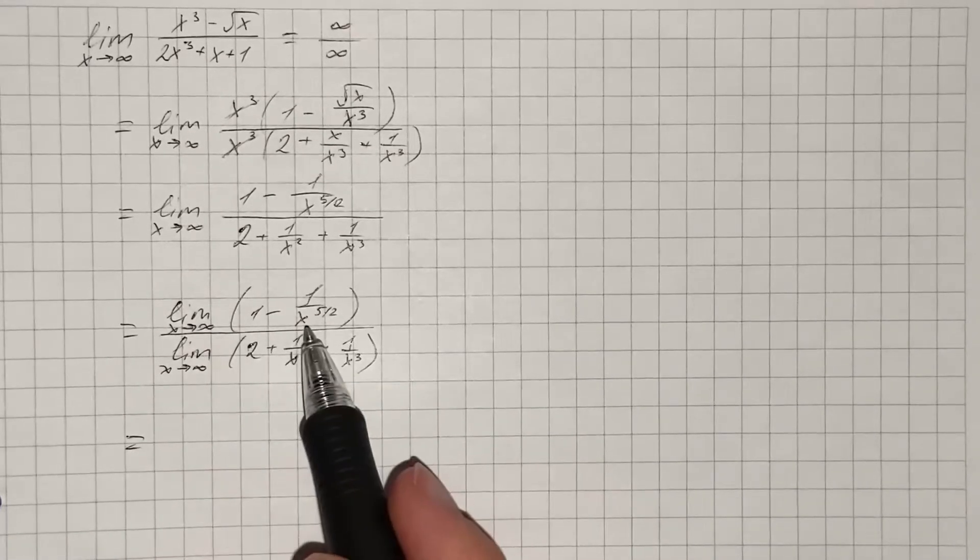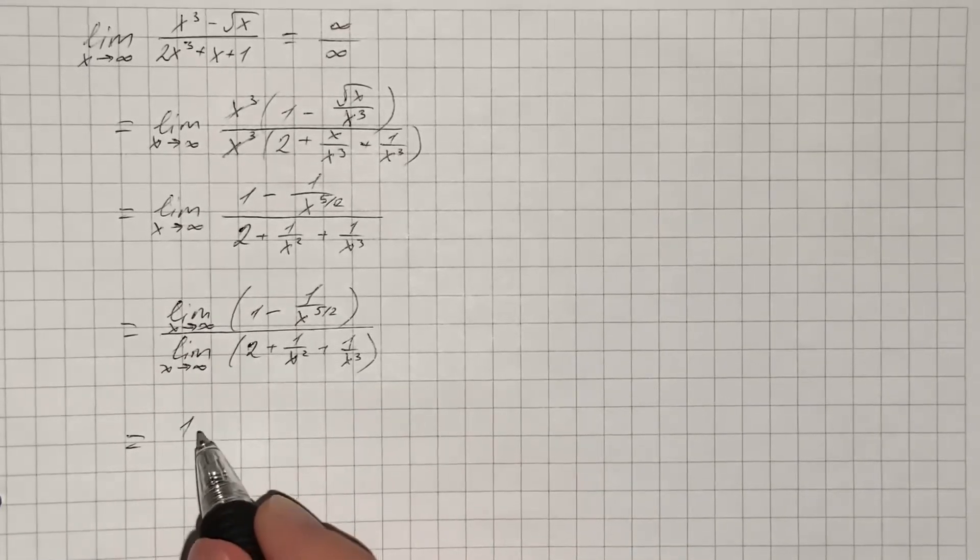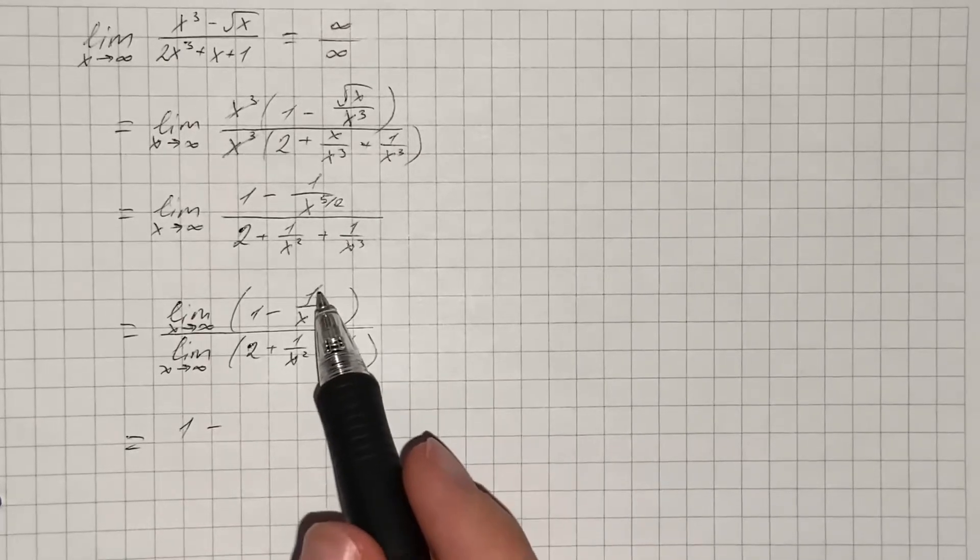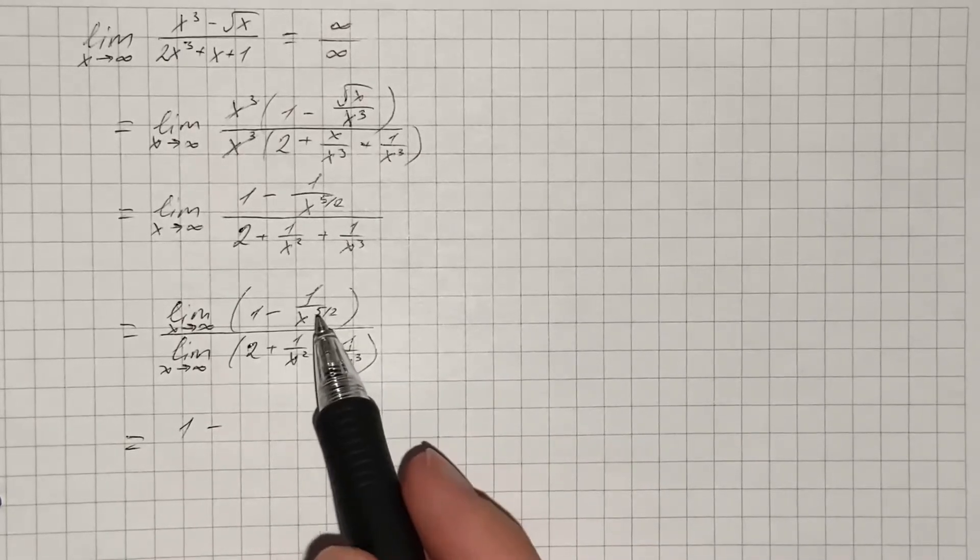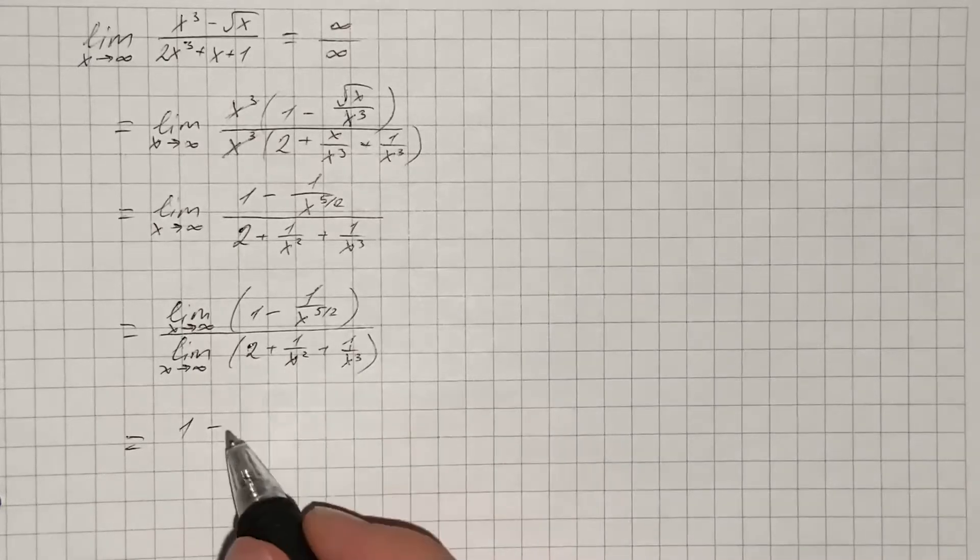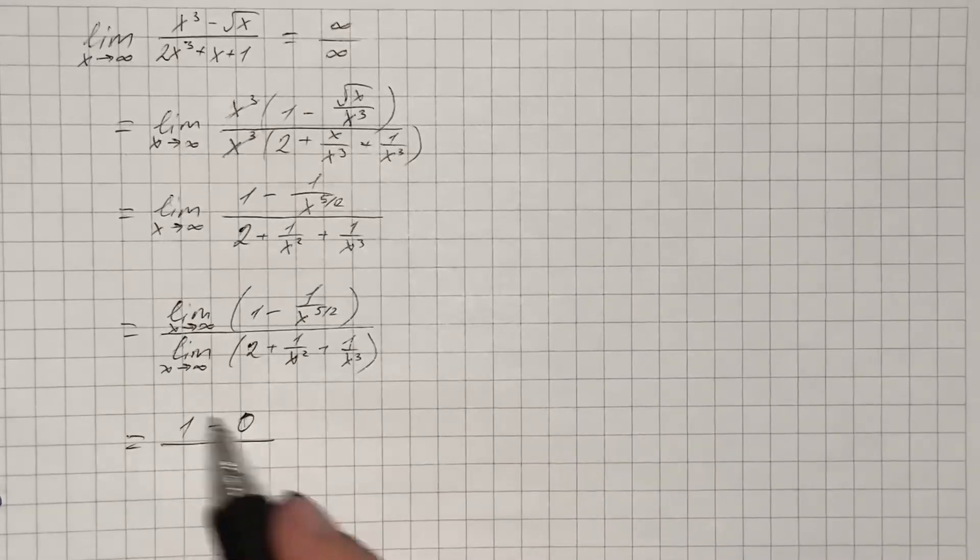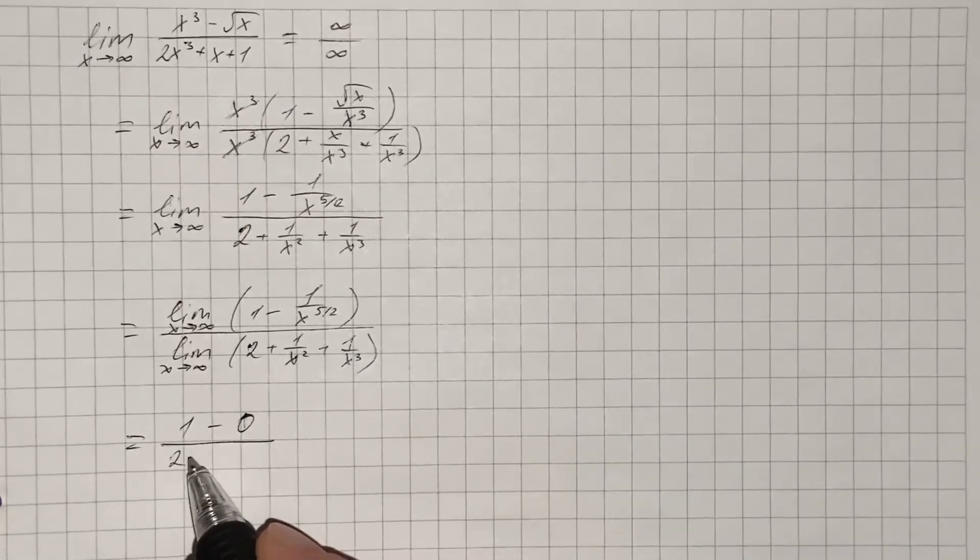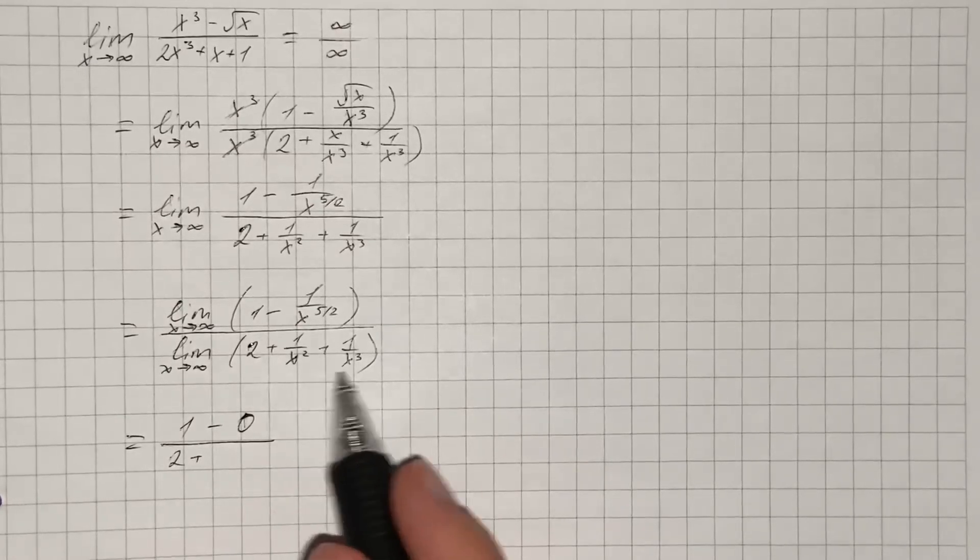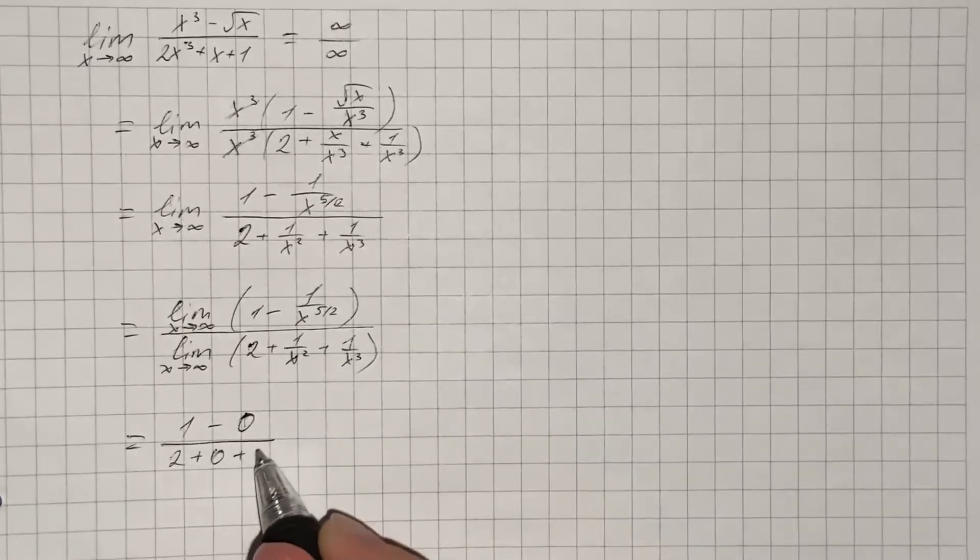So now we just substitute x with infinity to get 1 minus, and we know that 1 divided by infinity equals a number close to 0. So we get 1 minus 0 over 2 plus, and we get the same here, so plus 0 and plus 0.